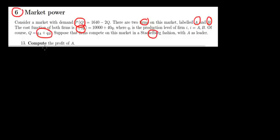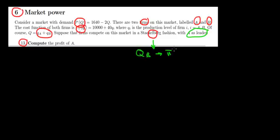Suppose that we have a Stackelberg competition. What's going to be the profit of company A? Recall that in Stackelberg, we have a dynamic game — in other words, there's going to be a leader and a follower in the market. The question states that A is going to be the leader. As the leader, A knows that there's going to be a follower that also produces output, so the leader must take into account how much the follower will produce in order to maximize its own profit.